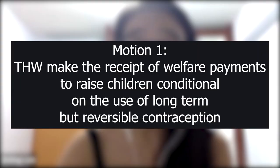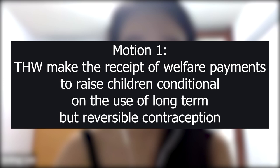The first motion we're going to prep is a motion from Chennai Worlds. It's the motion: 'This house would make the receipt of welfare payments to raise children conditional on the use of long-term but reversible contraception.' We're going to go through the proposition arguments first and then the opposition arguments.